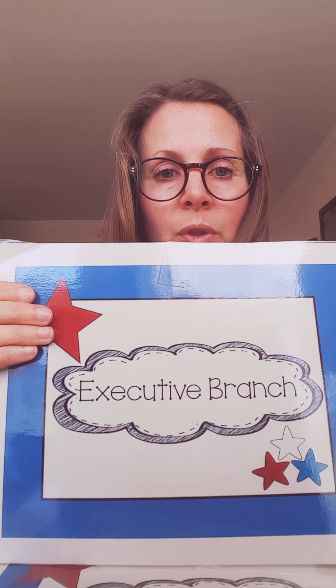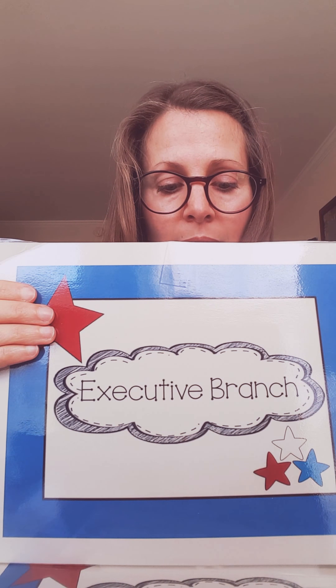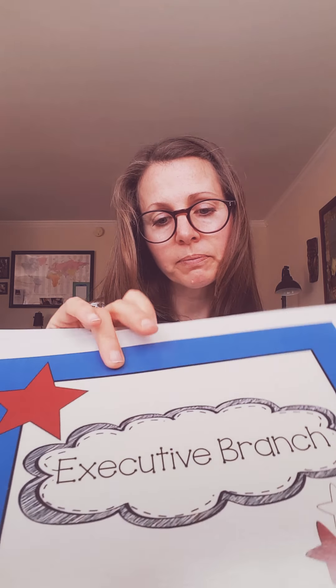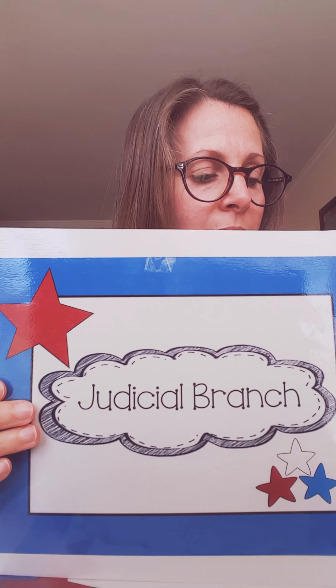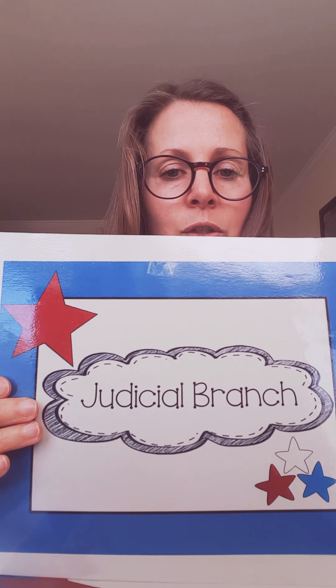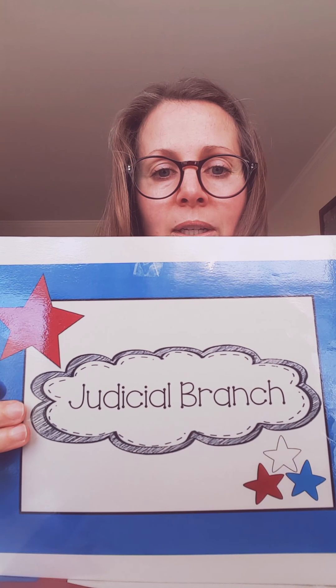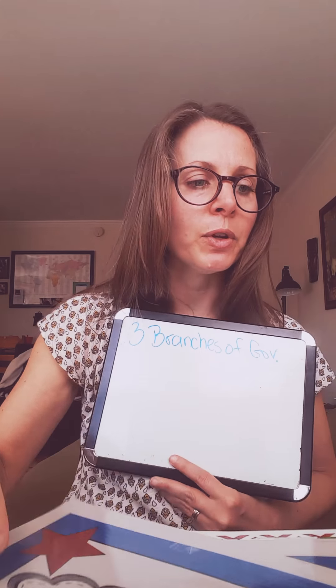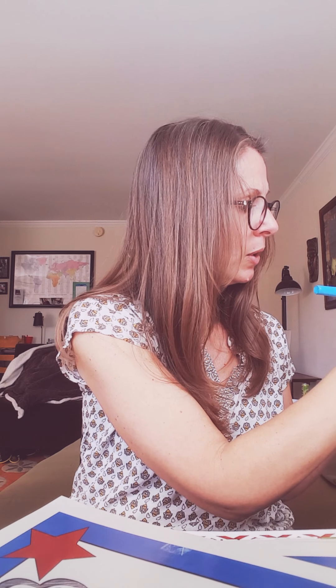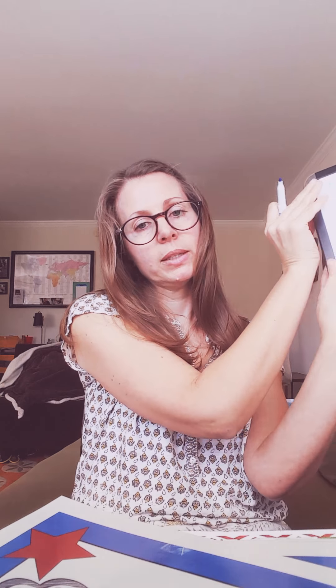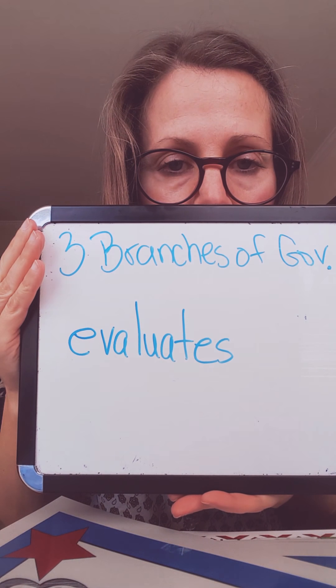So now you have two pages — one with the legislative branch on it, one with the executive branch on it. And your third and last page, the third branch of government, is the judicial branch. Here's how we spell that. Judicial branch — meaning 'judge,' right? Root word. And the judicial branch, they evaluate the laws. When it gets tricky, the judicial branch is the one that evaluates the laws. Evaluates the laws.